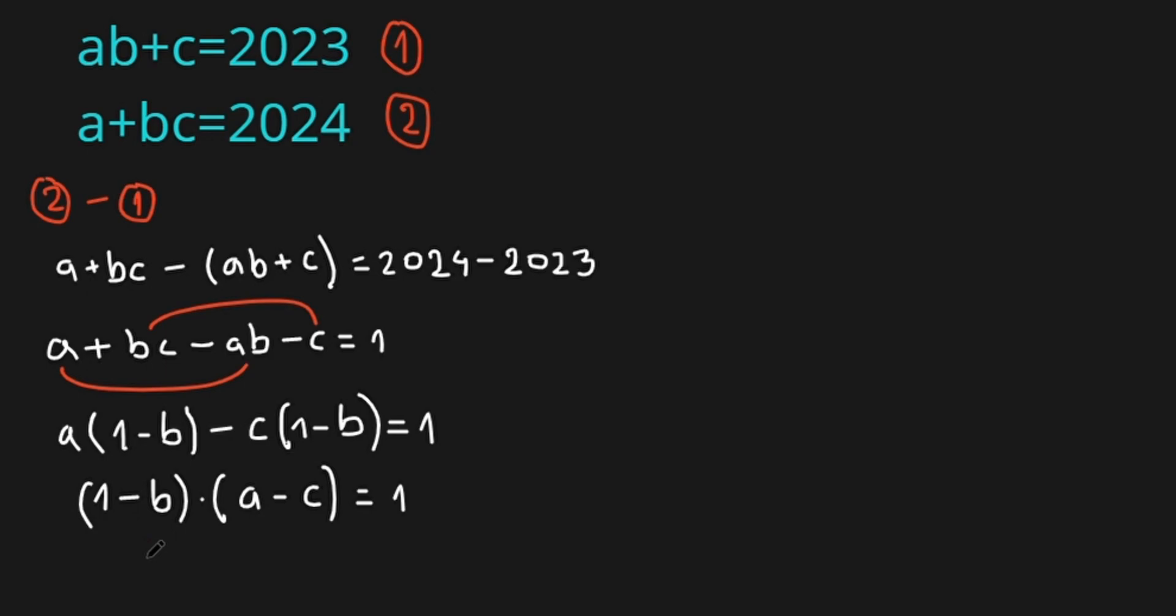Now because A, B, and C are integer numbers, this means that 1 minus B and A minus C are also integer numbers. So now I have to find the factors of 1. 1 can be written as itself, 1 times 1. It can also be written as minus 1 times minus 1.